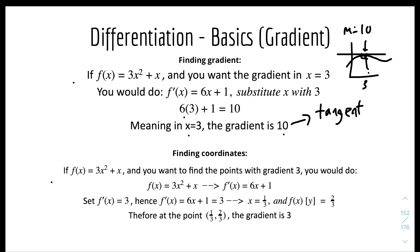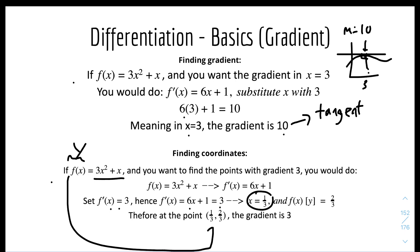For finding coordinates: if f(x) equals 3x squared plus x and you want to find the point with a gradient of 3, you first differentiate to get f'(x) equals 6x plus 1, then set f'(x) equals 3. So 6x plus 1 equals 3, solving for x gives x equals 1 over 3. Substitute back into the original equation to get the y value, giving coordinates (1/3, 2/3) where the gradient is 3.